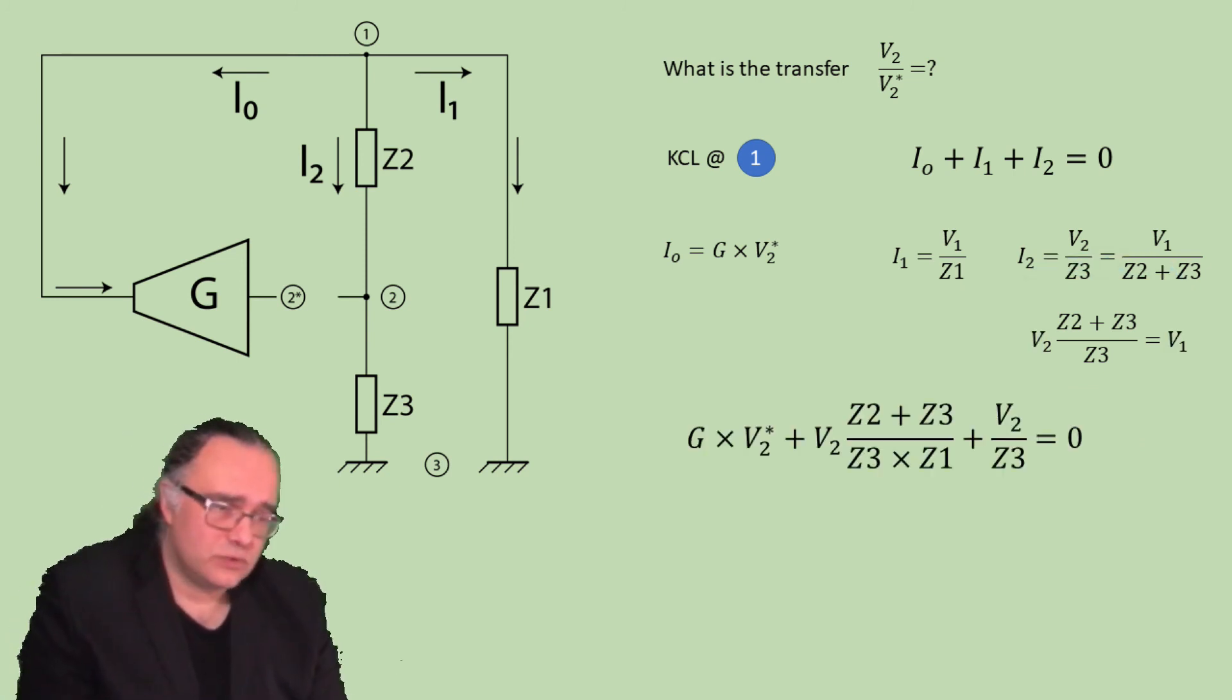Now you have all ingredients to substitute in the current law and get an expression only based on V2. I0 is simply G times V2 star. I1 is V2 times Z2 plus Z3 divided by Z3 times Z1. And then I2 is V2 divided by Z3.